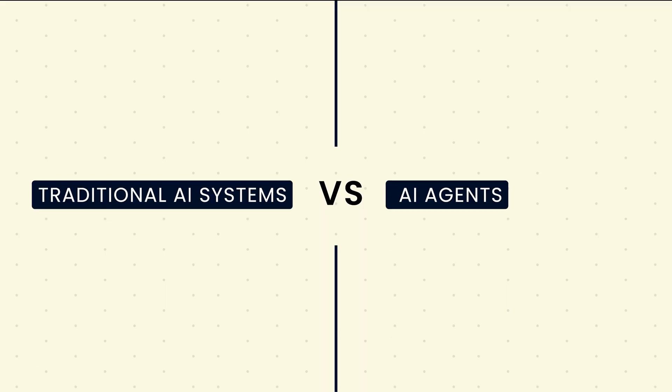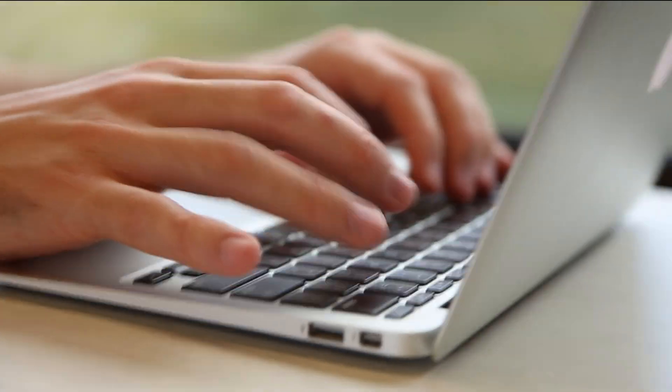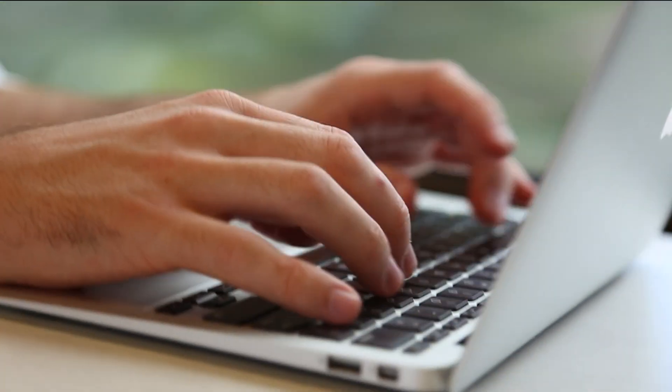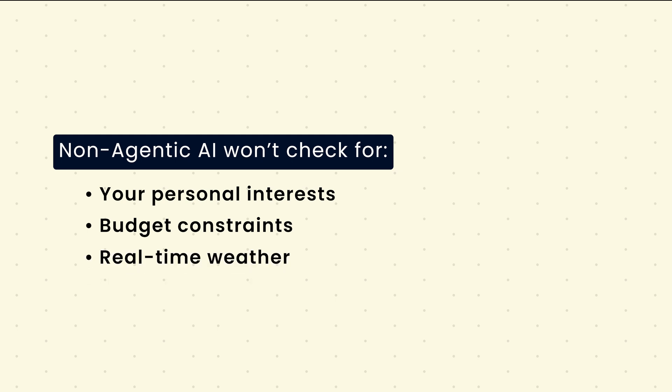Let's first understand the difference between traditional AI systems and AI agents. A non-agentic AI is like a simple chatbot running on an LLM — it does exactly what you ask, but without deeper reasoning or iteration. For example, if you go to ChatGPT and say 'generate a travel itinerary for a seven-day trip to Japan,' it will instantly give you a schedule. The result might be decent, but it won't check for your personal interests like food, history, adventure, budget constraints, real-time weather or seasonal events, or flight and hotel availability. It's a one-shot response — quick, but often generic.